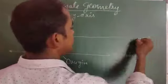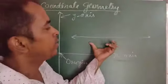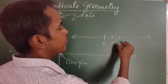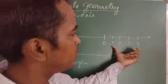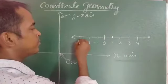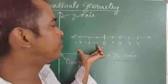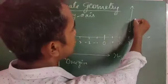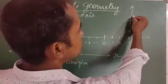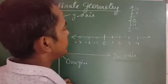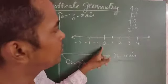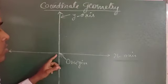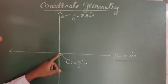Any number line has an origin. The right part of the number line is positive and the left part is negative. If we draw a perpendicular line, that line also has an origin. When both lines intersect, both origins coincide and become the same point.